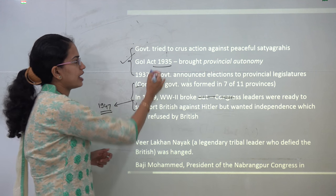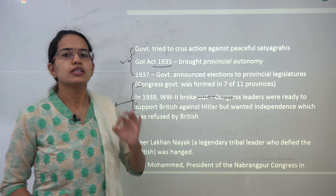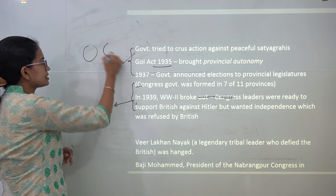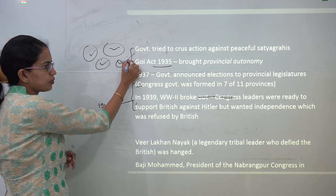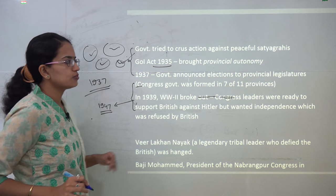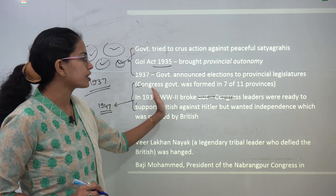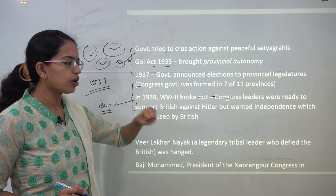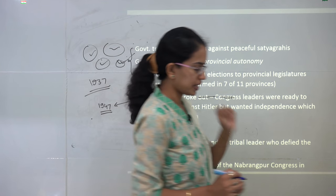In 1935, the Government of India Act was passed, which brought about provincial autonomy — meaning each province of India would have its own autonomy. In 1937, the government announced elections to the provincial legislatures, and finally Congress was formed in 7 of the 11 provinces, showing that the strength of Congress was gaining pace.